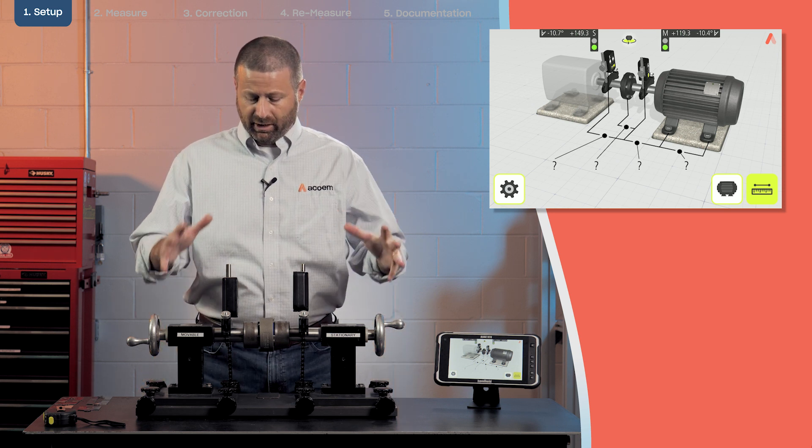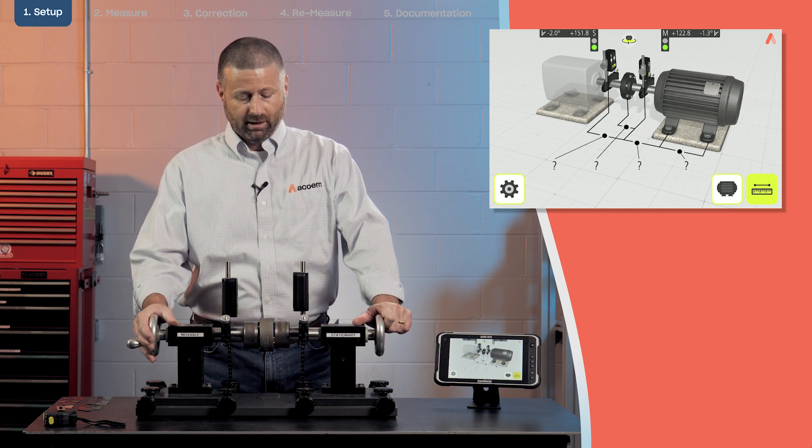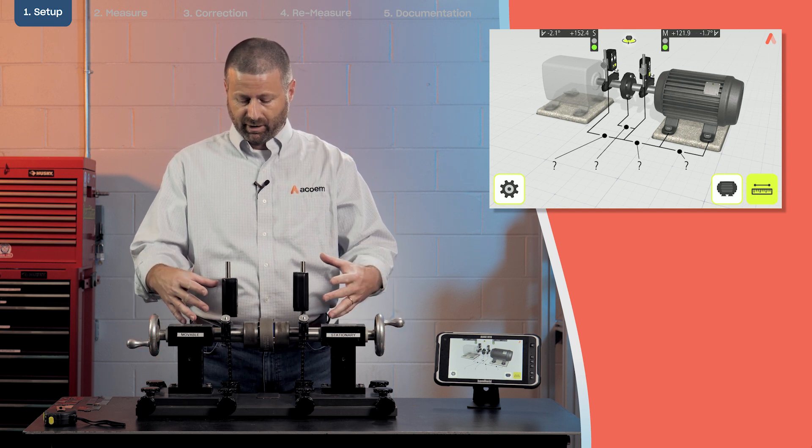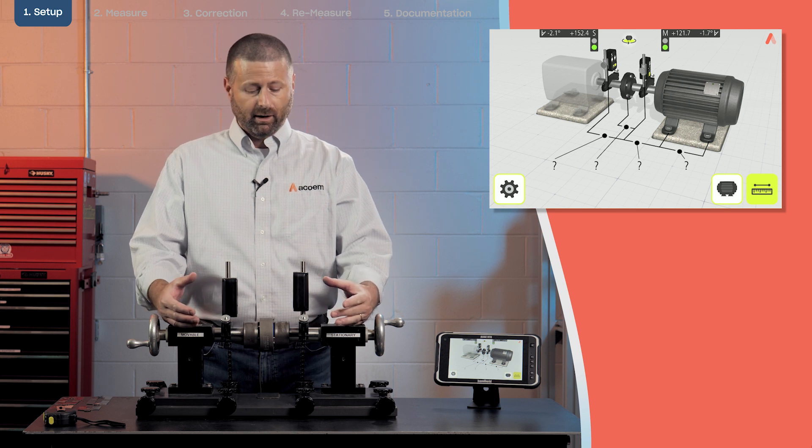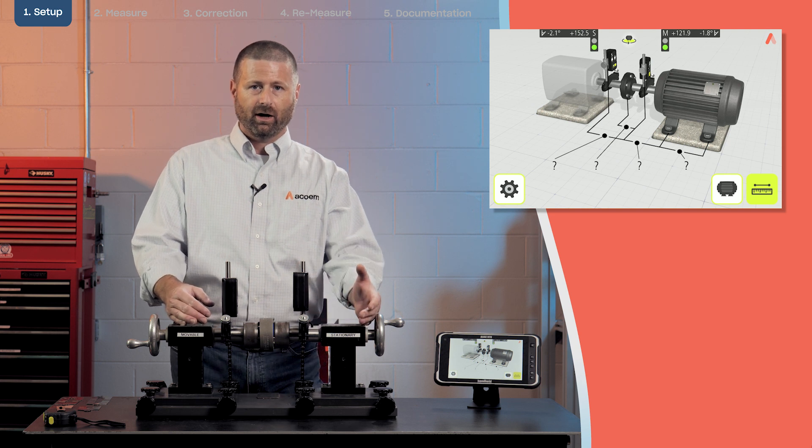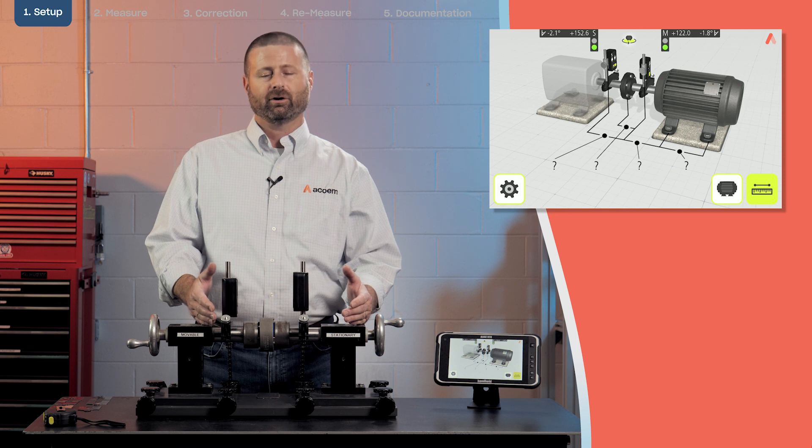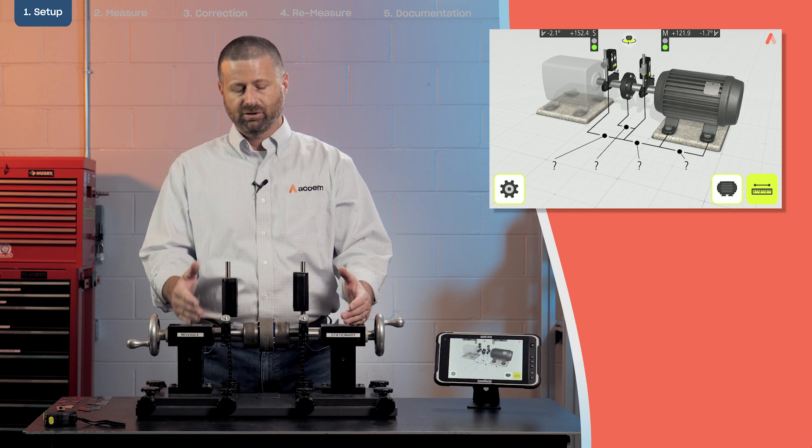The first thing we're going to do is get everything set up correctly. In the setup, we have two chain brackets here and a stationary sensor and a movable sensor. Generally the stationary going on the side that you don't plan on moving and the M sensor going on the motor or the side that you do plan on moving.